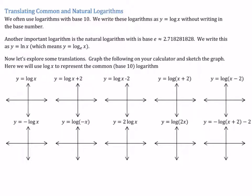Now let's look at translations. A common logarithm is base 10; when we have base 10 we usually just write it as log of x with no number shown. Another important base is the natural logarithm, base e, where e is approximately 2.718 — a number that comes up a lot in nature, limits, and calculus. We write it as y equals ln x, which means log base e.